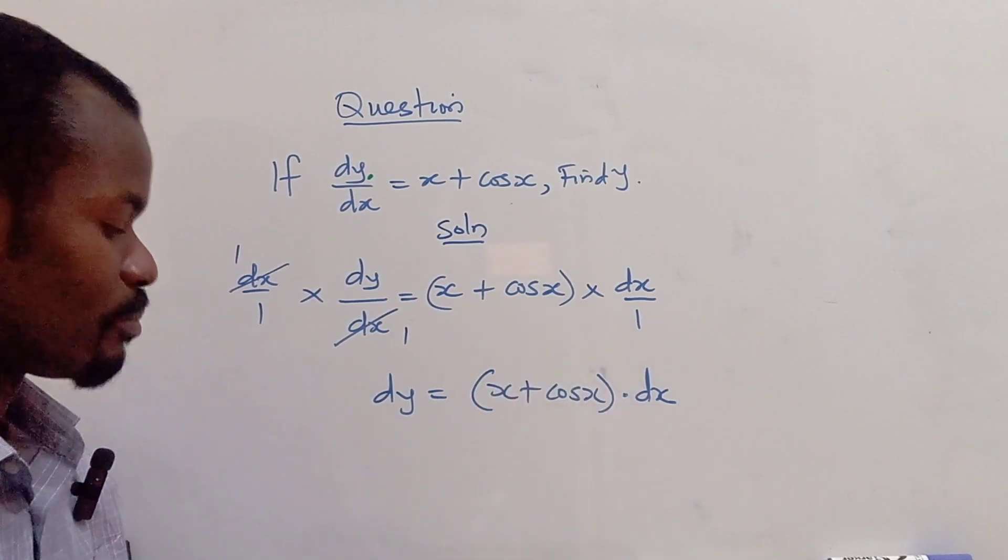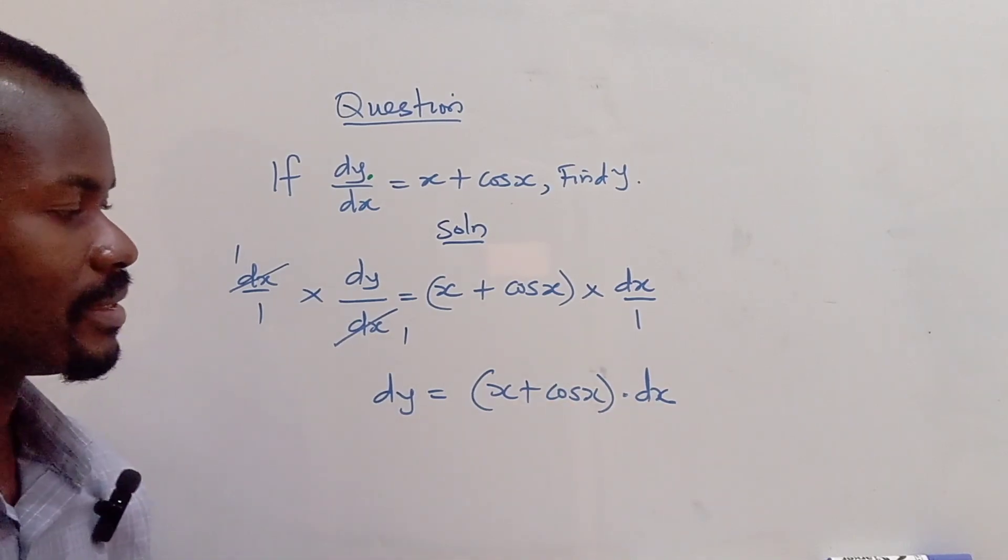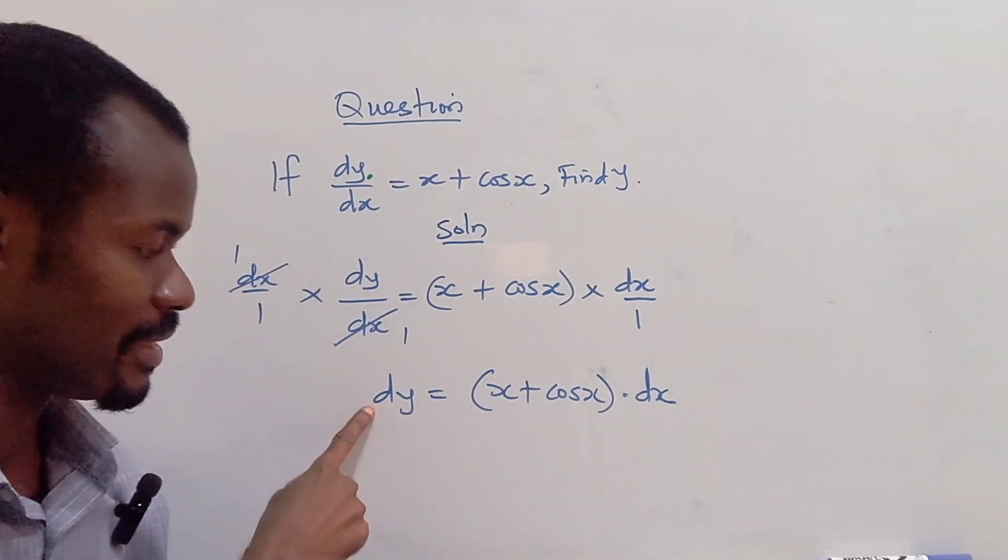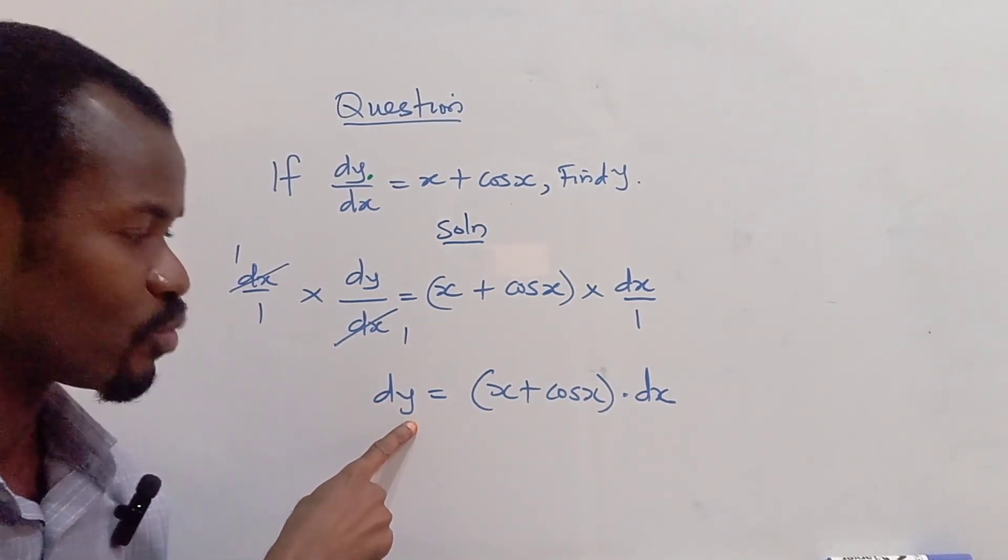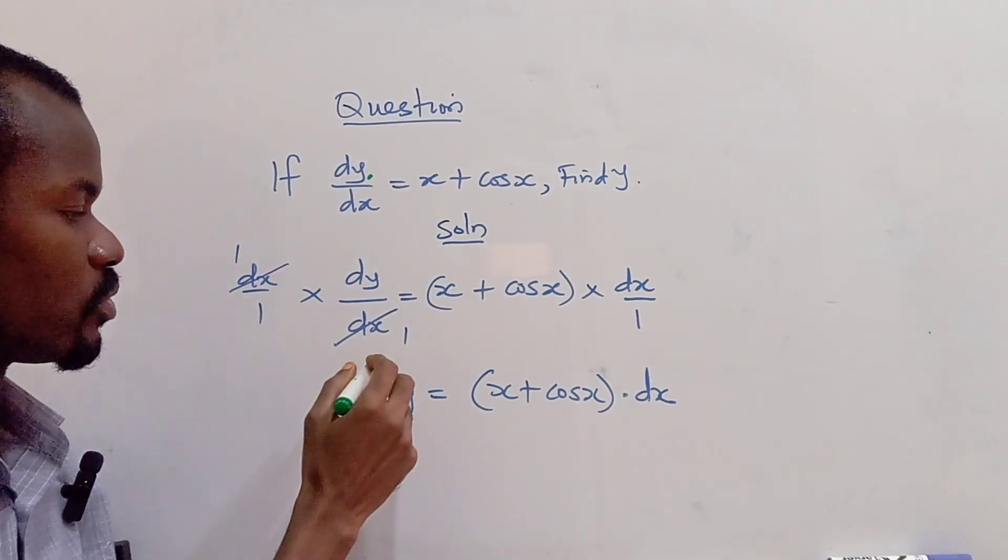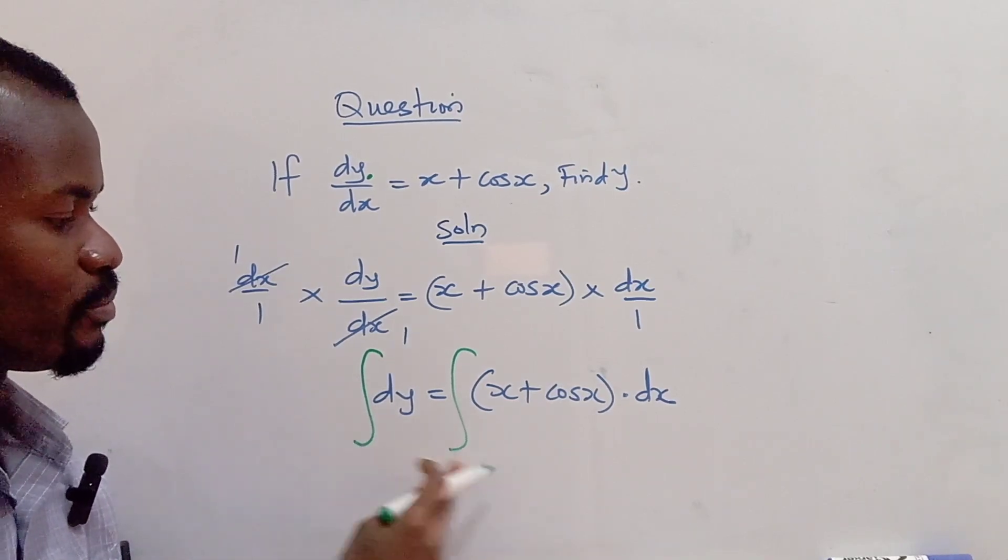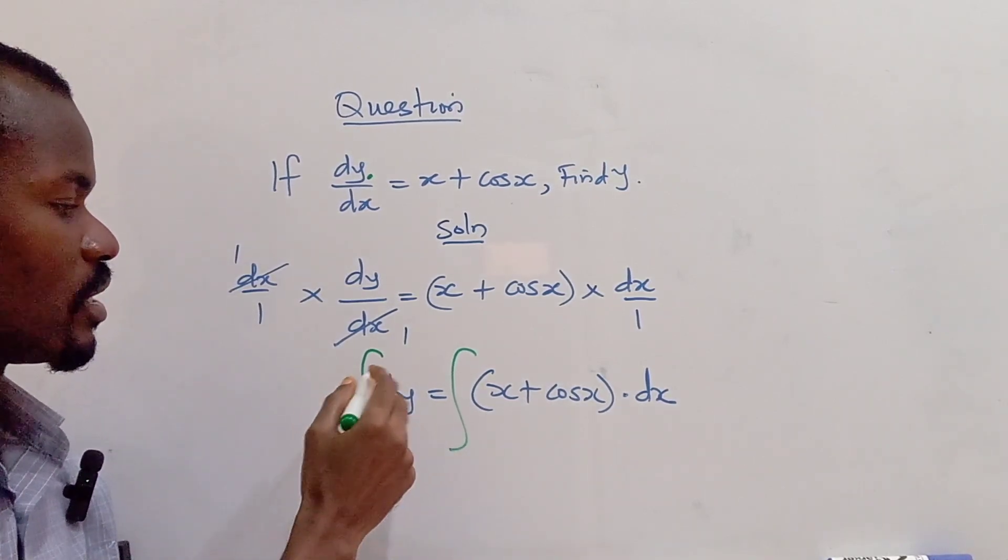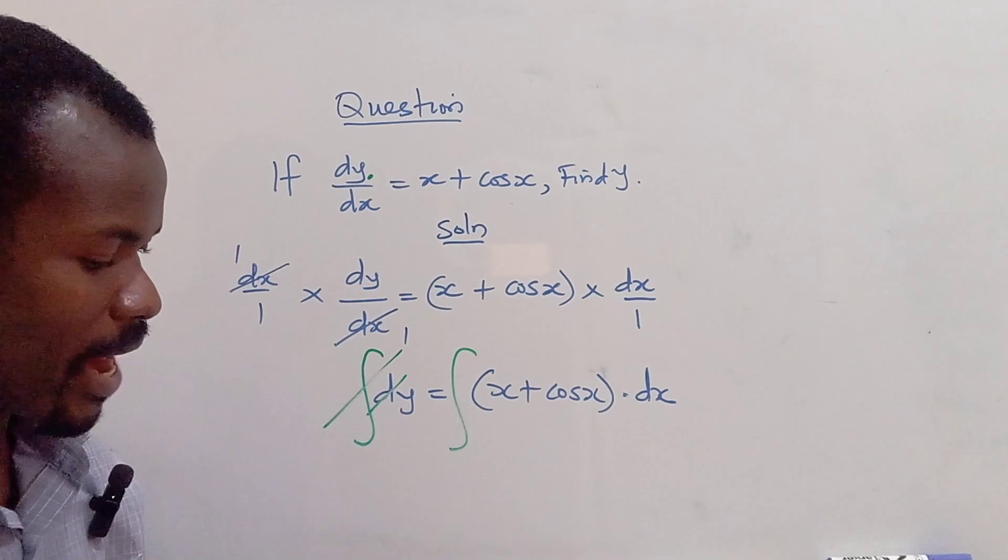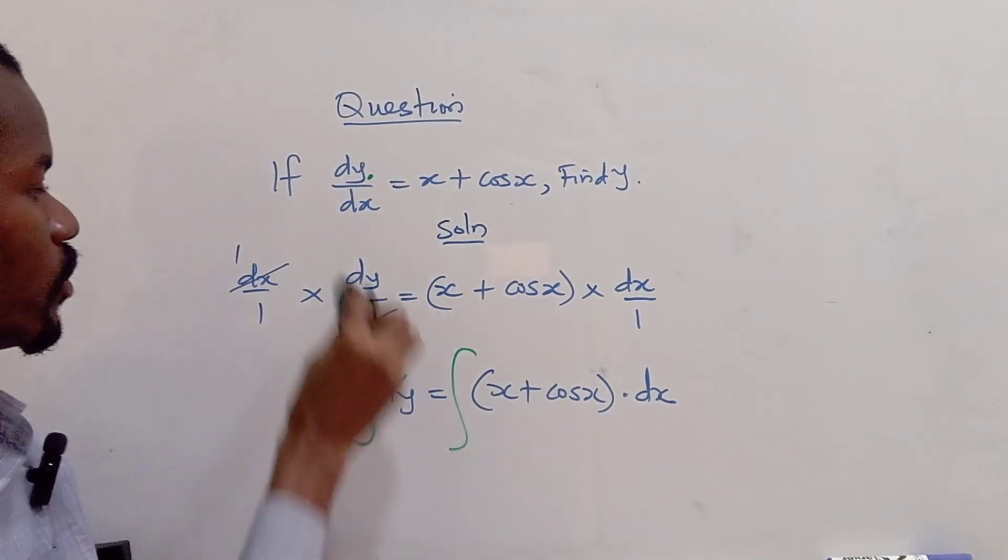This dot stands for multiplication. All right, now that I've gotten this, how do we find y? How do I make it become y? Now all we need to do is we are going to put our integral sign. Whenever I put the integral sign on both sides like this, this cannot cancel out this. So we are left with y. So let's see what that is going to give us.